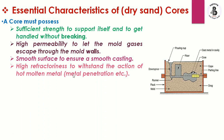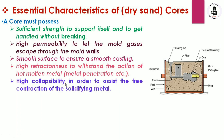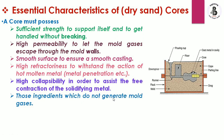Cores must have high refractoriness to withstand the action of hot metals — since molten metal will be poured around the core, the core materials, whether sand or metallic, must withstand high temperatures. Cores must also have high collapsibility in order to allow free contraction of the solidifying metal — after solidification, the core materials should collapse easily so the hollow cast product can be extracted. Additionally, core ingredients should not generate mold gases.